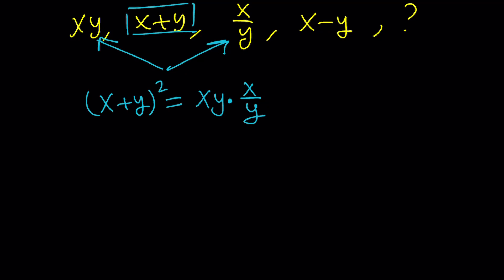Let's go ahead and expand this. We're going to get x squared plus y squared plus 2xy. The y cancels out, and we end up with x squared. And then x squared cancels out, and we end up with y squared plus 2xy equals zero.